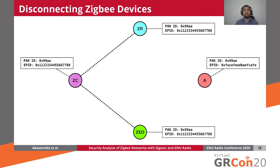Using this testbed, the main vulnerability we discovered allows an attacker to disconnect any Zigbee device from its network. I will describe this using a simple Zigbee network consisting of three devices: the Zigbee coordinator, the Zigbee router, and the Zigbee end device, labeled by their initials. To the right, we see the attacker configured to use the same PAN ID — Personal Area Network Identifier — but a different extended PAN ID than the victim's network. The attacker can easily learn these values because Zigbee devices transmit them in their packets unencrypted.